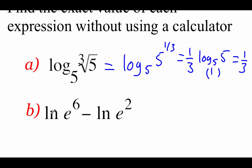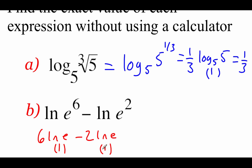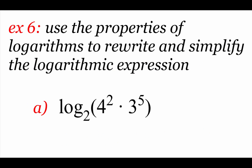For natural log of e to the 6th power minus natural log of e squared, we bring the powers down in front on both. Remember, a natural log is a base e logarithm, so natural log of e is just 1 for both. This gives us 6 times 1, which is 6, minus 2 times 1, which is 2, so we get 4 as our final answer.